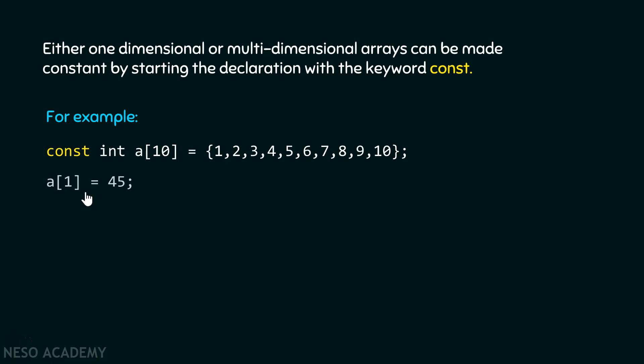Suppose we try to change some value, then we won't be able to change it. Like in this example, we can see we want to change this value to 45. Then it will simply produce an error. Let's see what the compiler says when we execute this program.